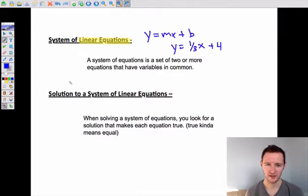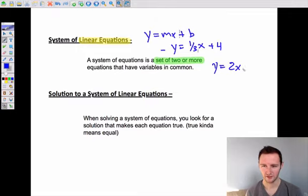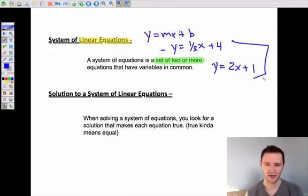A system of linear equations is just a set of two or more, that's what the system part means, a set of two or more of these linear equations that have variables in common. So a possible system of linear equations could be this is one of the equations, and y equals 2x plus 1 is the other one. Those together form a system, because they have two variables in common: y and x.